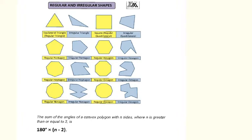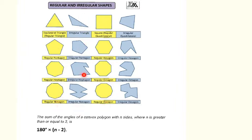Depending on how many sides and angles a polygon has, we use that to name it. A triangle has three sides and three angles. A quadrilateral has four sides and four corners. A pentagon has five, hexagon has six, heptagon has seven, octagon has eight, nonagon has nine, and decagon has ten. Here they show you an example of each polygon — a regular one and an irregular one. The yellow ones are regular and the blue ones are irregular.